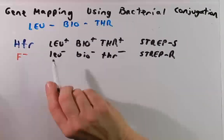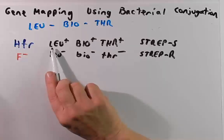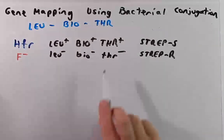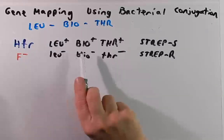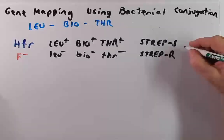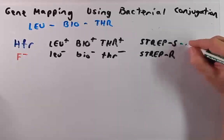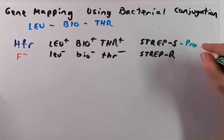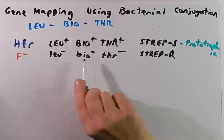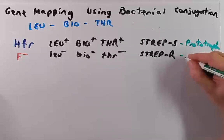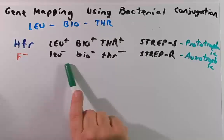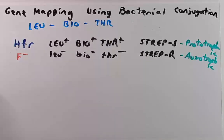Let's review a couple of terms here. Since the HFR strain is Leu-plus, bio-plus, and threonine-plus, that means it can make its own leucine, its own biotin, and its own threonine. So we would say that this strain is prototrophic for those nutrients. And since the F-minus strain is Leu-minus, bio-minus, and threonine-minus, we would say that it is auxotrophic for these nutrients, meaning that it cannot make these various nutrients. We're going to take advantage of that as we map these genes.